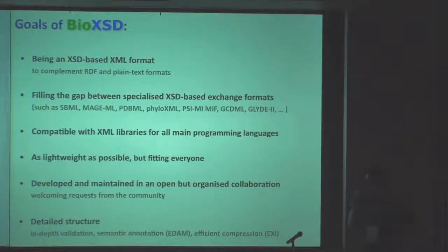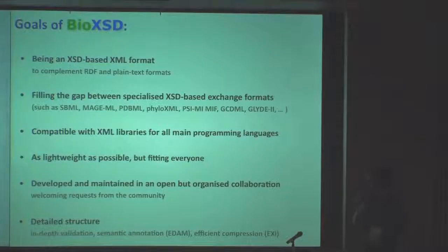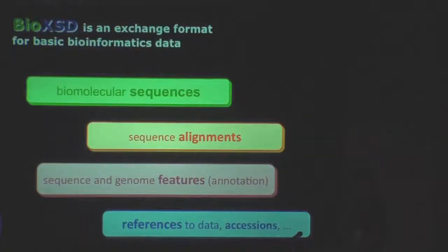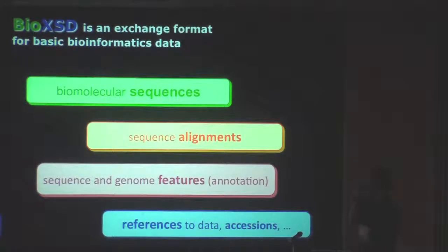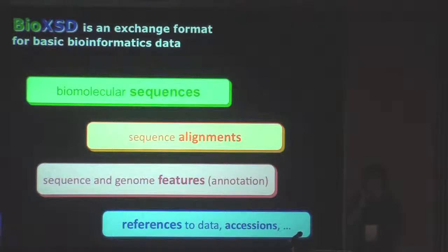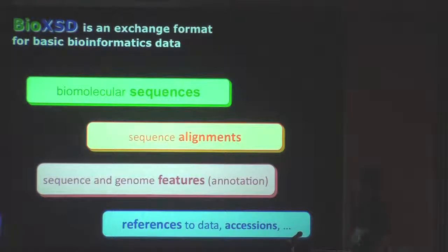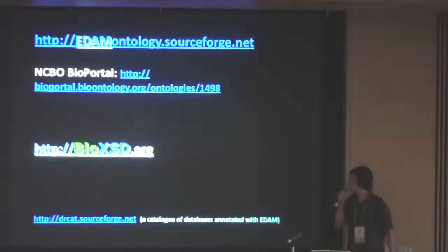We need to have a detailed structure which enables validation of the data, semantic annotation — which is done, for example, with the data ontology — and efficient compression, for example, with the new XSD standard. BioXSD is an XSD-based format for sequences, alignments of sequences, and sequence and genome features, which includes any kind of ontology annotation by any ontologies. The idea is to have a common XSD while being able to use any ontologies you want — not just ontologies, but any enumerated information from the Semantic Web. It also contains accessory types for references such as accessions and other small types of data.